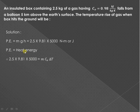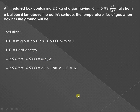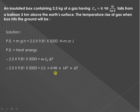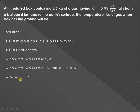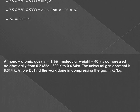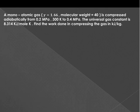The heat energy at constant volume is m·cv·ΔT. Substituting the values with cv converted to joules (0.98 × 10³ J/kgK), and solving for the temperature rise ΔT, the value comes out to be approximately 50.05°C.